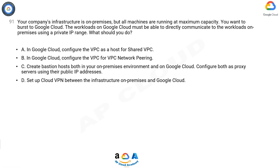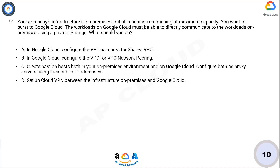A: In Google Cloud, configure the VPC as a host for Shared VPC. B: In Google Cloud, configure the VPC for VPC network peering. C: Create bastion hosts both in your on-premises environment and on Google Cloud, configure both as proxy servers using their public IP addresses. D: Set up Cloud VPN between the infrastructure on-premises and Google Cloud.